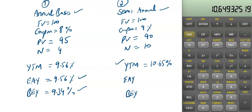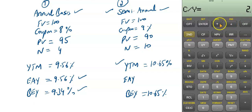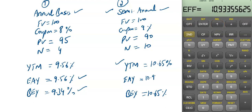Remember, this 10.65% has been calculated on a semi-annual basis, so the bond equivalent yield is the same — 10.65% — because BEY is also calculated on a semi-annual basis. But now you need to calculate the effective annual yield. Enter 10.65 as the nominal rate in the I-conversion function and set compounding to 2 per year. The effective annual yield computes to 10.93%. So the effective annual yield is 10.93%.